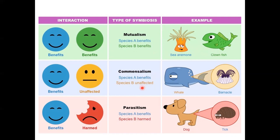Commensalism: A benefits, B does not — and it's not that B gets hurt, it's just not affected either way. The example is the whale. A barnacle attaches itself to the enormous whale. The barnacle gets a huge benefit — it gets swum through the water with no effort and gets to collect its food. The whale is unharmed because the barnacle is so small that it cannot harm or help the whale in any way.